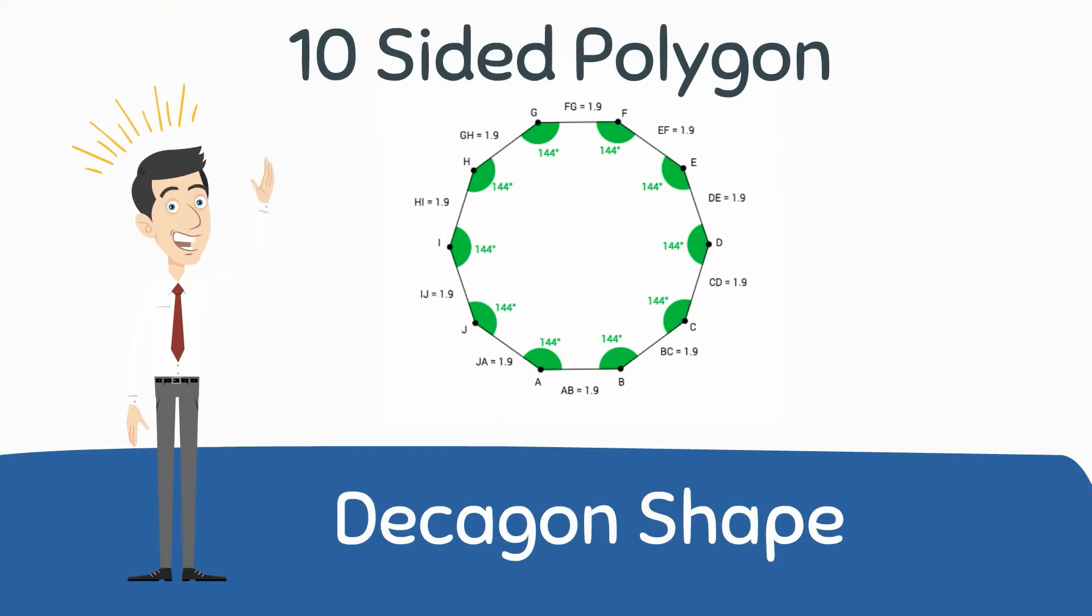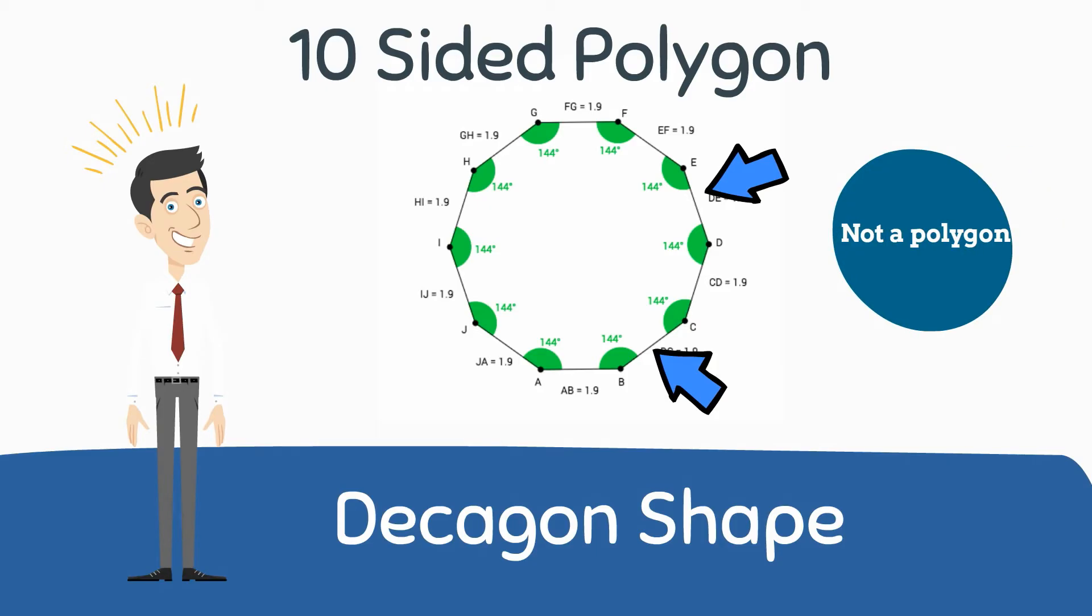A quick review of polygons. A polygon has straight lines, is a closed shape, and does not have curves. Circles and shapes that include curves are not polygons.